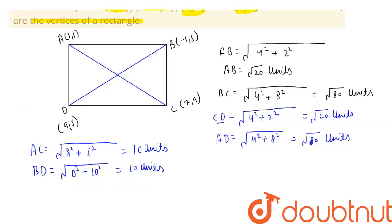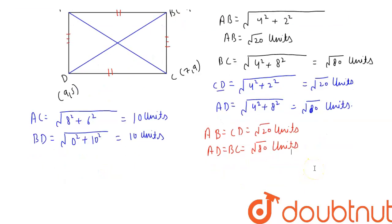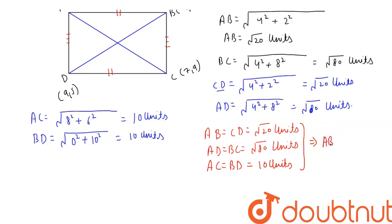So we have found that AB equals CD equals √20 units, and AD equals BC equals √80 units. Additionally, the diagonals AC equals BD equals 10 units. Since opposite sides are equal and both diagonals are equal, we can conclude that ABCD is a perfect rectangle.